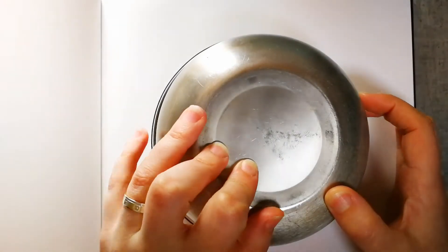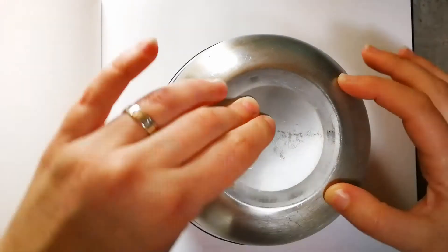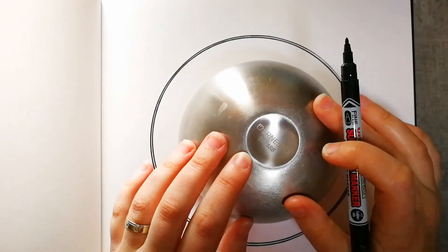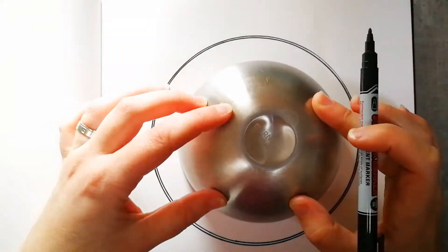Now take the next object in size order and position it so it's as close to centered in the first circle as you can get, then repeat the process until you've drawn your smallest circle.